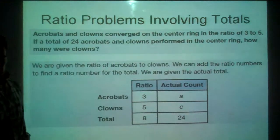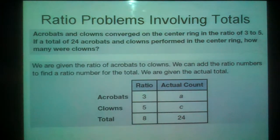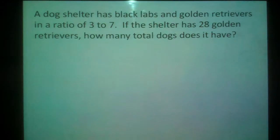We've got one more to look at. And we'll definitely go over more of these. But I just wanted to introduce us to it tonight. Okay. A dog shelter has black labs and golden retrievers in a ratio of 3 to 7. If the shelter has 28 golden retrievers, how many total dogs does it have? Now, this one, they're asking us for a total. Let's set up our table first.